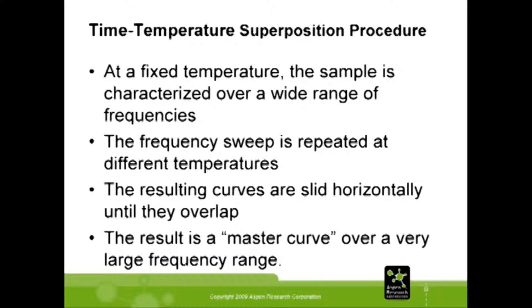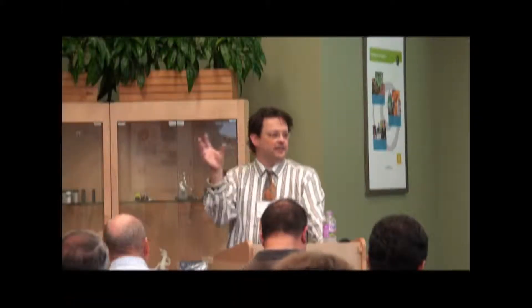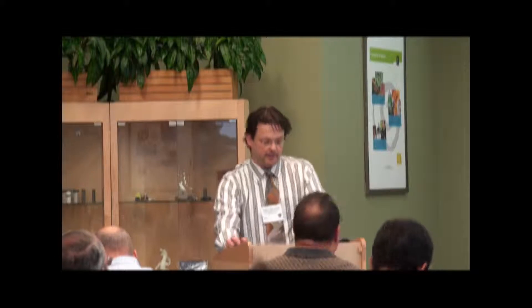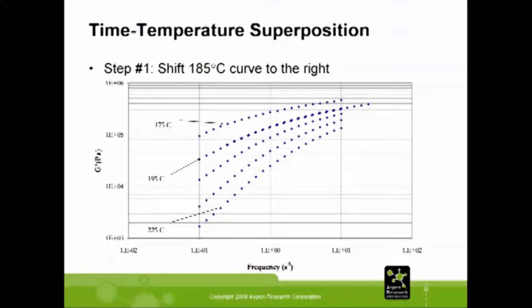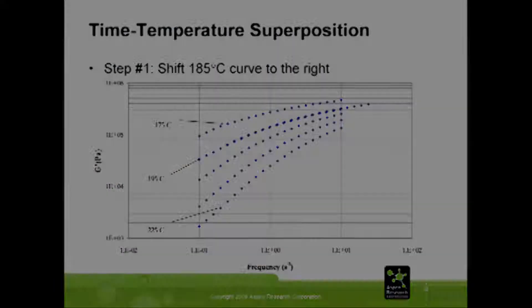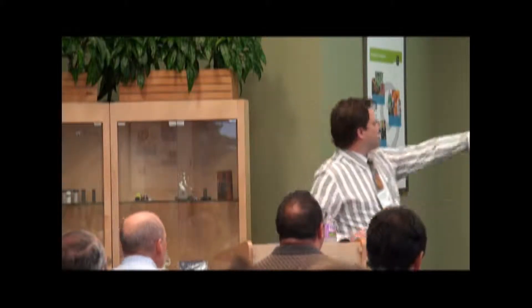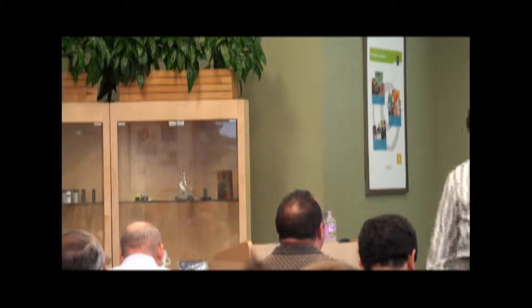So you take the data from earlier and what you do is take each of the individual curves and start sliding them horizontally on the graph until they start overlapping. You can see that this allows you to expand the data into shear rate ranges beyond what you actually measured. The result is a master curve which covers a much larger frequency range. This is the same data — 10-degree intervals between 175 and 225 degrees. The client was interested in data at 195 degrees, so we take the curve at 185 degrees and shift it to the right until it overlaps, starting to expand the data out past our original measurement point.